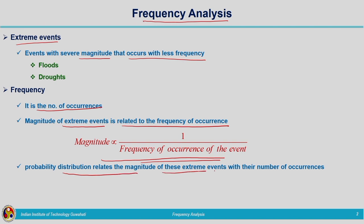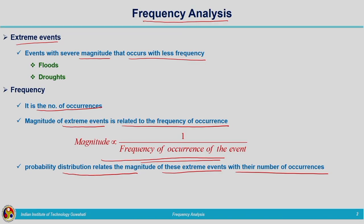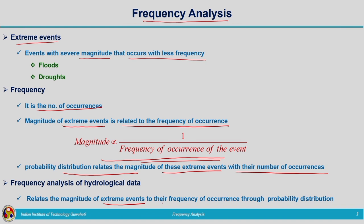This relationship between magnitude and frequency can be established by means of probability distribution functions. Probability distribution relates the magnitude of extreme events with the number of occurrences. We can use a particular kind of probability distribution to relate the magnitude of an extreme event and its frequency of occurrence. Frequency analysis of hydrological data relates the magnitude of extreme events to their frequency of occurrence through probability distribution. The main aim is to relate the probability of occurrence of an event to its magnitude.